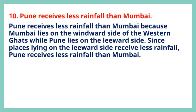Question 10: Pune receives less rainfall than Mumbai. Pune receives less rainfall than Mumbai because Mumbai lies on the windward side of the Western Ghats while Pune lies on the leeward side. Since places lying on the leeward side receive less rainfall, Pune receives less rainfall than Mumbai.